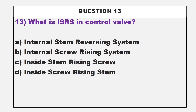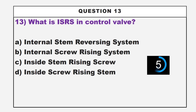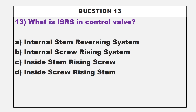This is our thirteenth question. What is ISRS in a control valve? Option A: internal stem revising system. Option B: internal screw rising system. Option C: inside stem rising screw. Option D: inside screw rising stem. The correct answer is option D, inside screw rising stem.